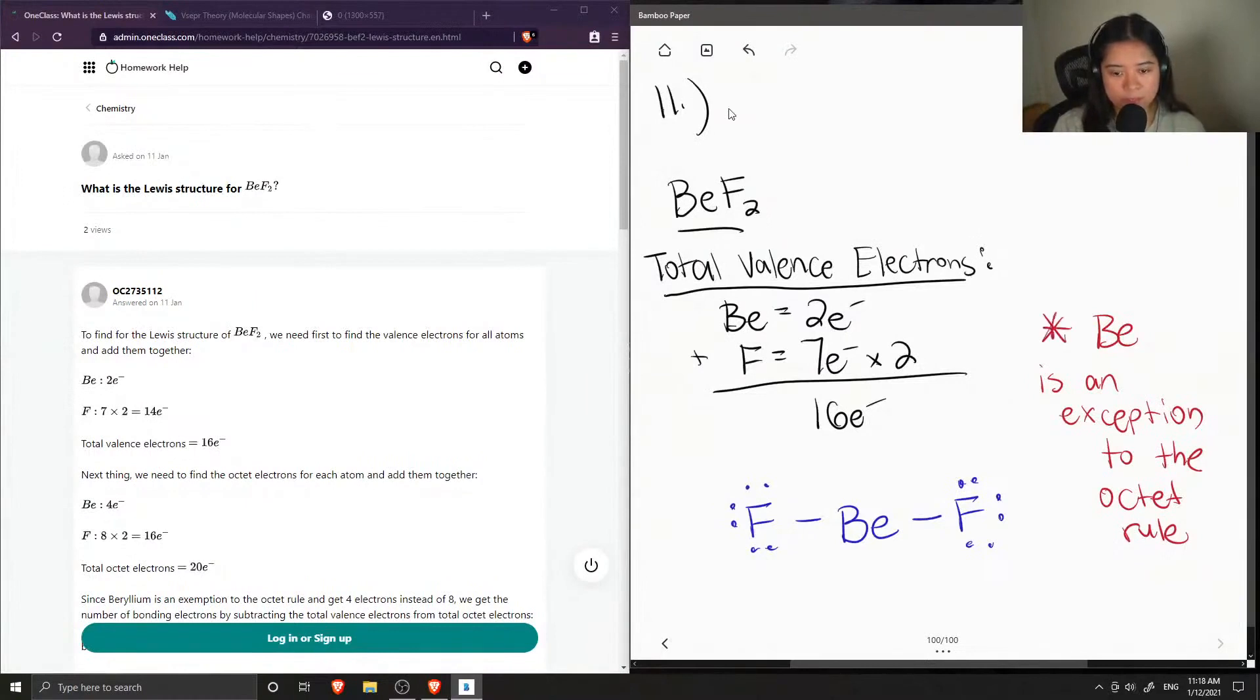So because beryllium is an exception to the octet rule, it's perfectly satisfied with only having not a full octet, and just having the two bonds to it.